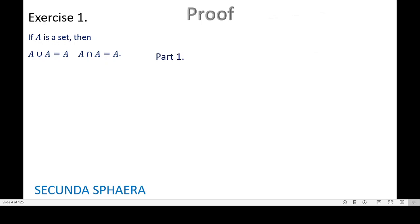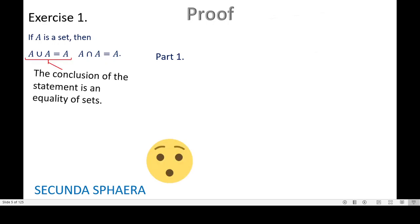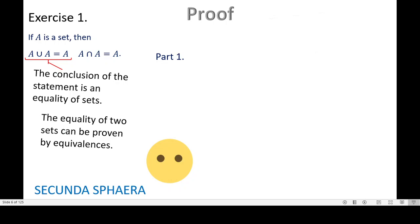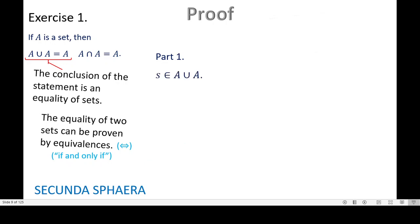For the first part — proving that the union of A and A is equal to A — we need to notice that this conclusion is an equality of sets. An equality of sets can be proven by equivalences. Equivalences are statements that have an 'if and only if' in their wording, also shown by double-sided arrows. To do this proof, we start with S in A union A. By definition, this means S is in A or S is in A. Definitions are always equivalent, so this step is an equivalence.